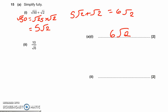Simplifying 10 over root 6. This question is asking us to rationalize the denominator of this fraction. To rationalize the denominator, we need to multiply by that surd over itself.